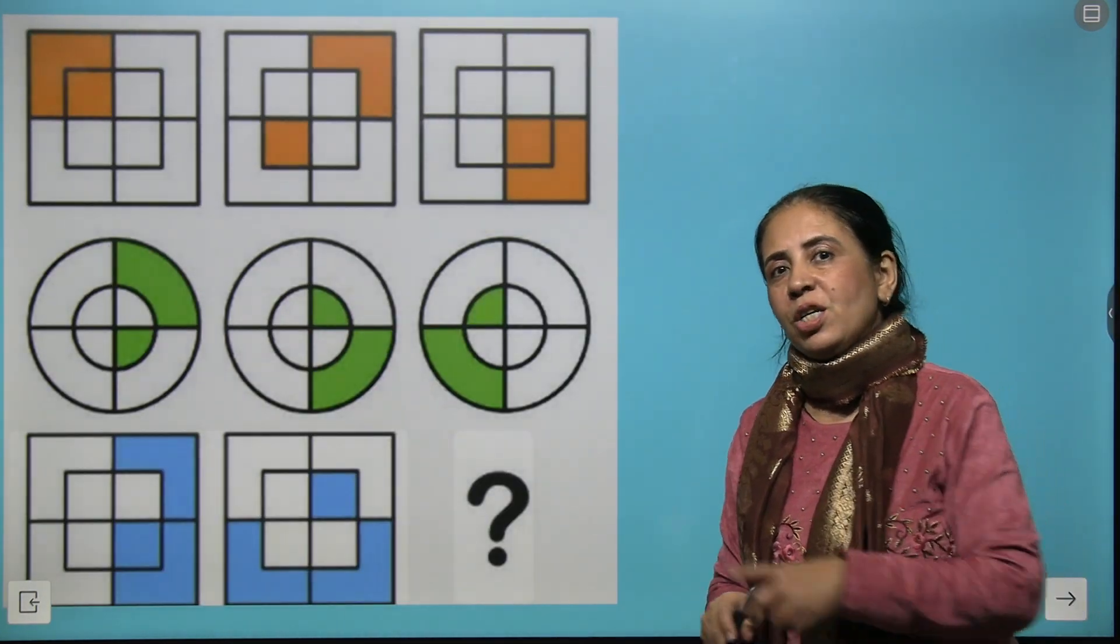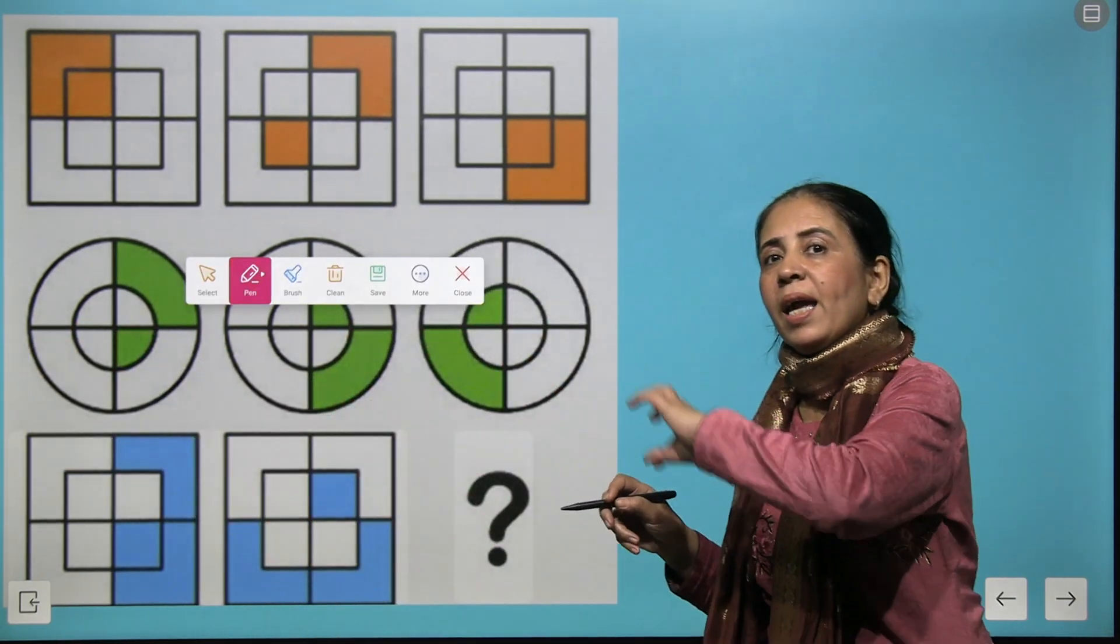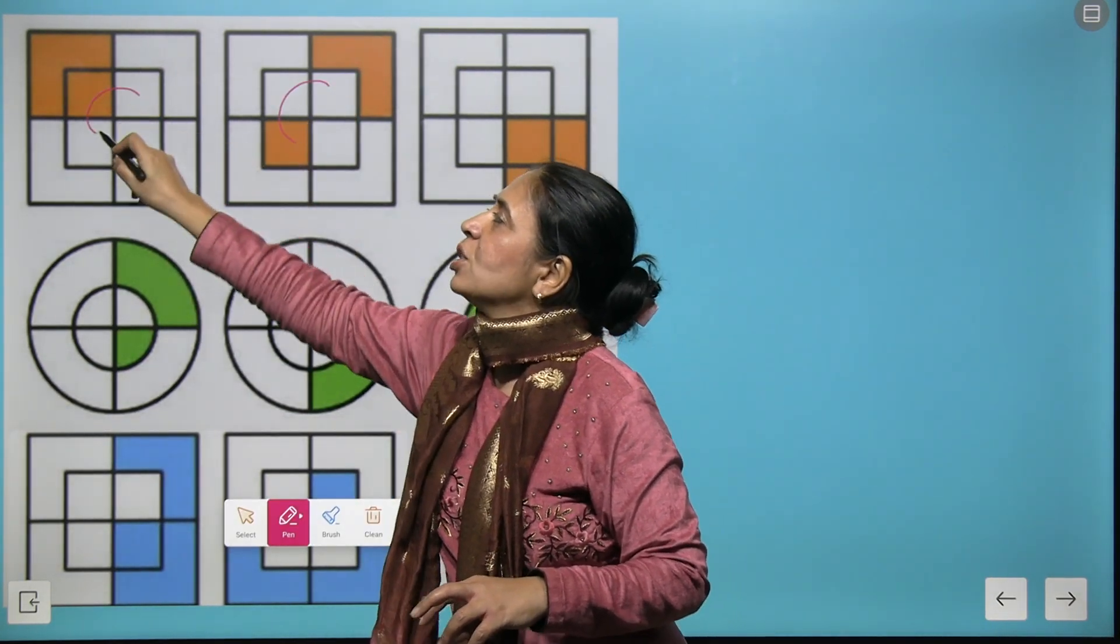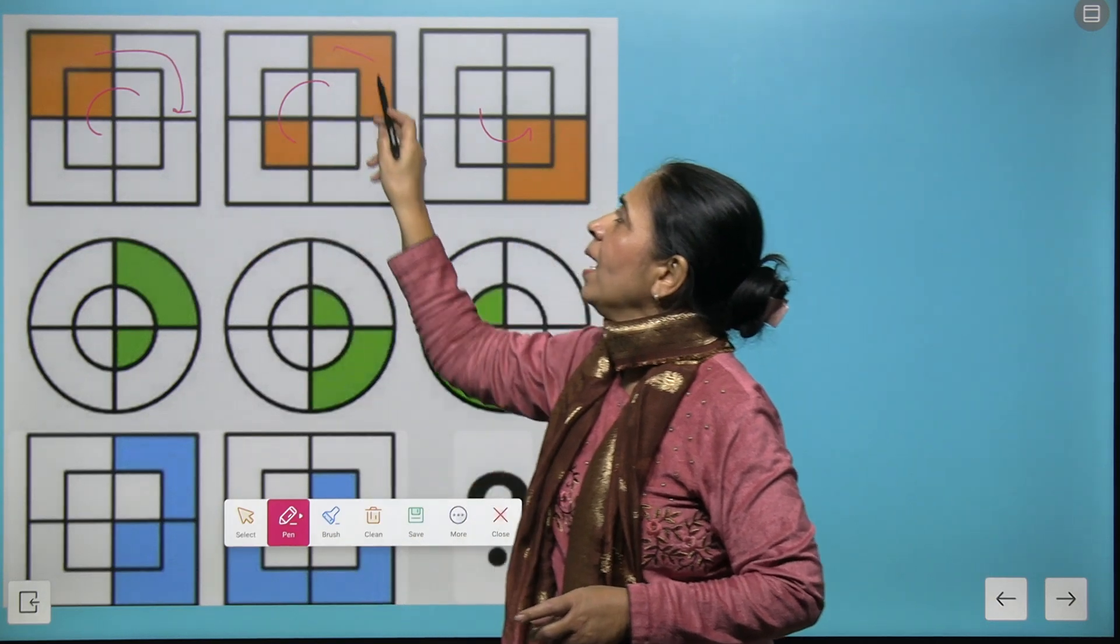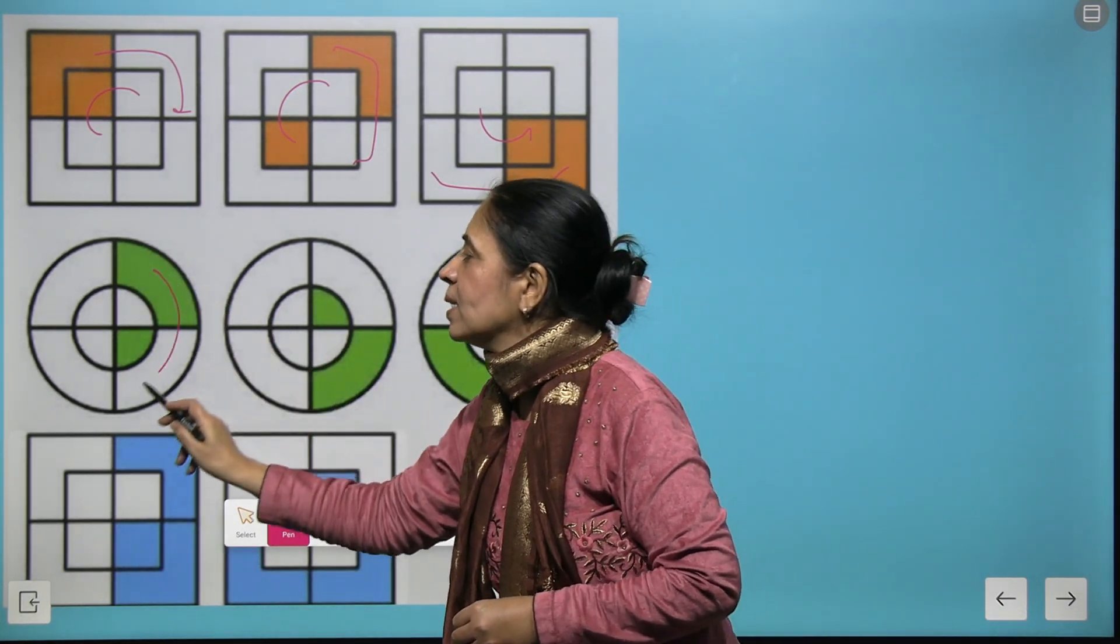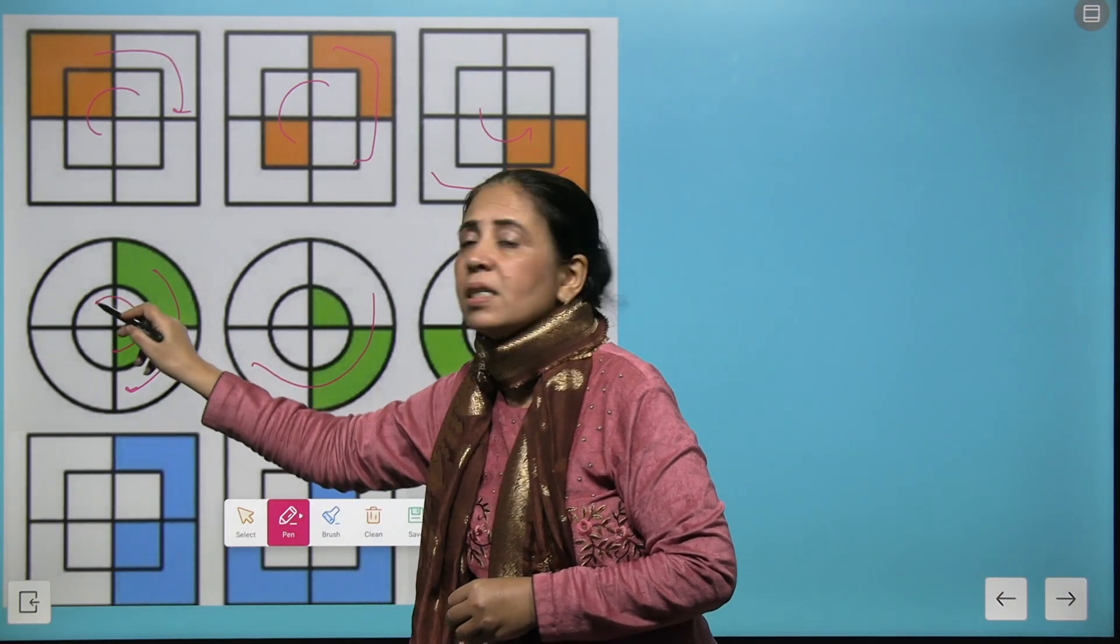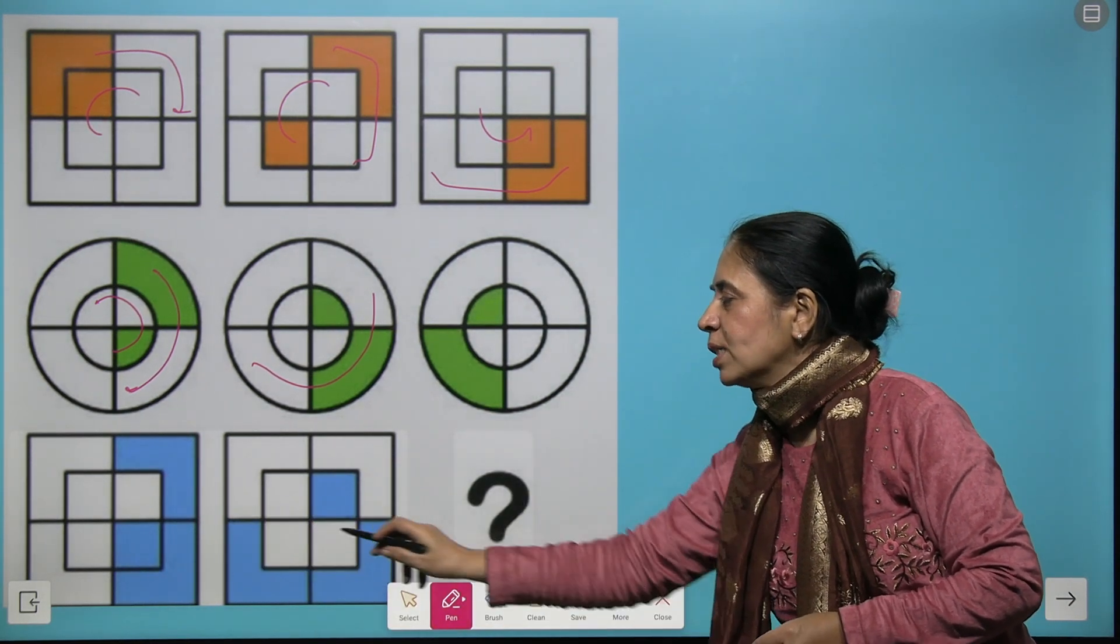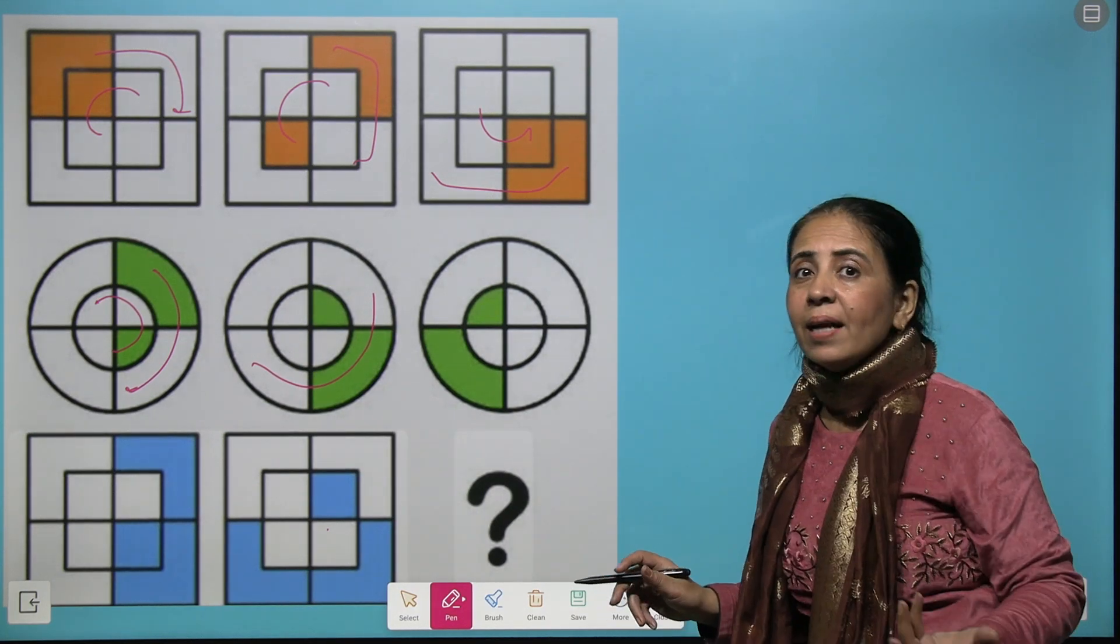Let's look at more analogy. Here the square or the circles are divided in segments where the inner segment is moving in anti-clockwise direction. And when you see the outer segment it is turning in clockwise direction. The same pattern is followed here. We see the outer segment moving in clockwise and the inner segment is turning in anti-clockwise. So we could easily predict what comes next here following the same pattern. That's analogy.